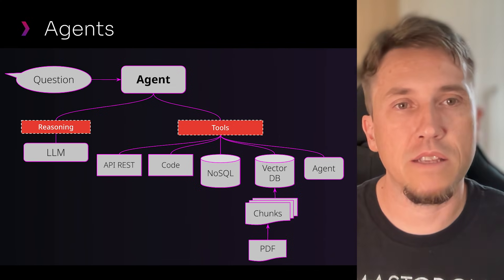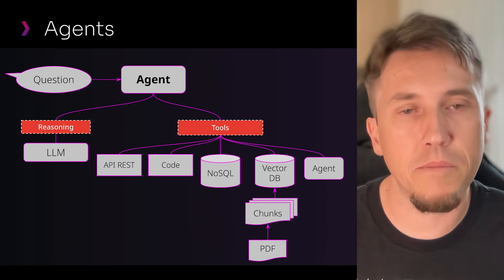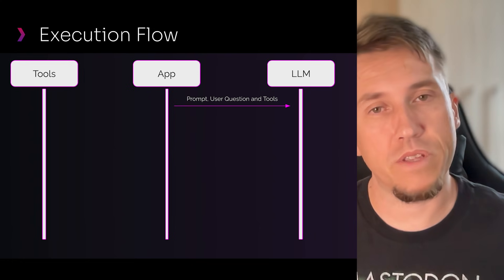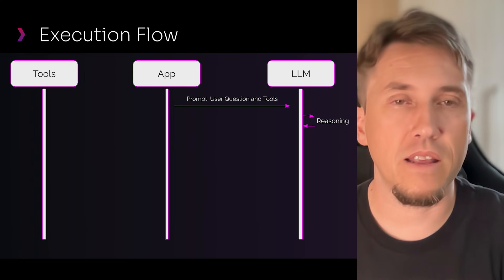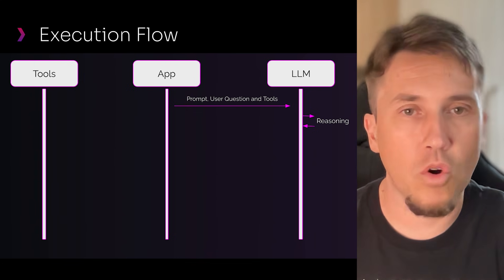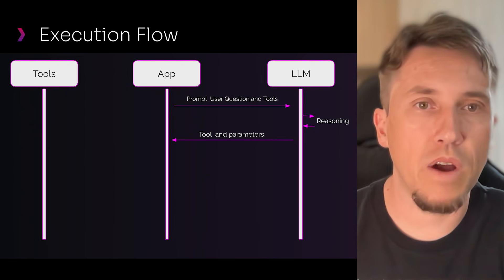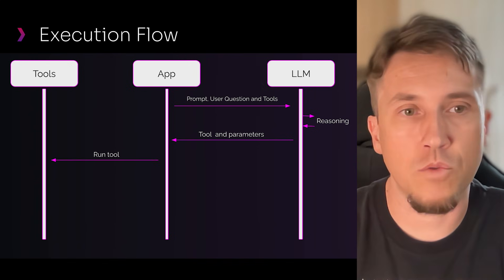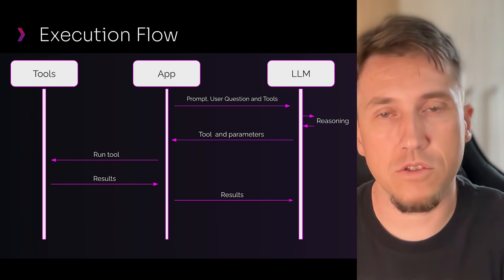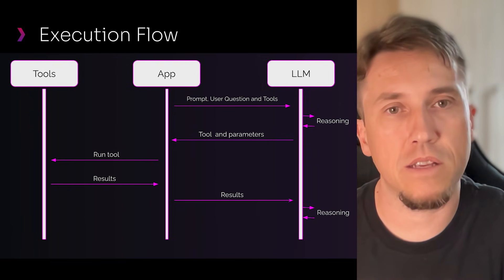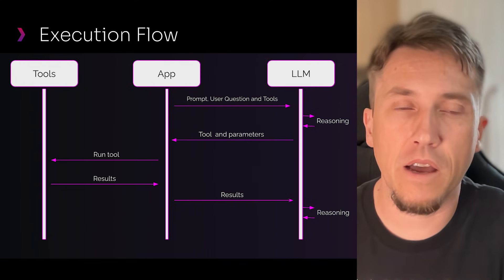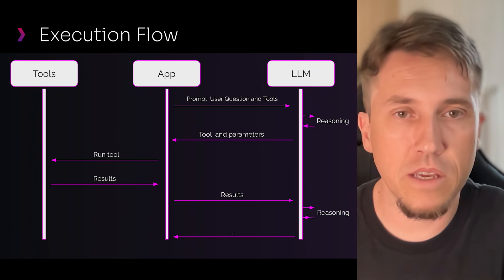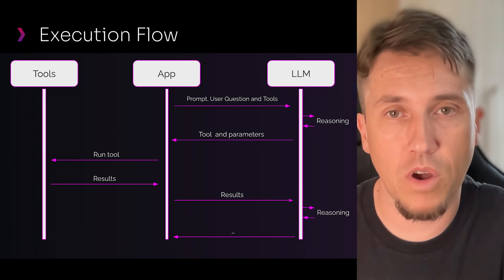The agent relies on the thought process from the LLM and runs tools to find the answer to questions. When the application receives a user input, it creates a prompt with the question and the available tools, then sends it to the LLM. The LLM does the reasoning — it understands how to solve the user's question considering the tools available — and asks the application to run a specific tool with parameters. When the tool returns a result, the application sends it back to the LLM, which reasons again to determine if it has enough data to answer. This loop continues until the LLM has the answer or determines an answer isn't possible.